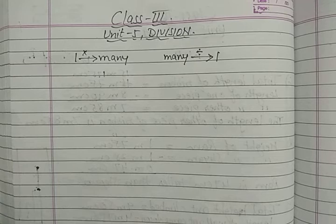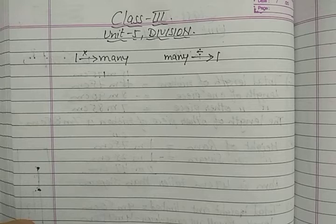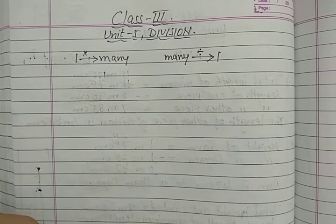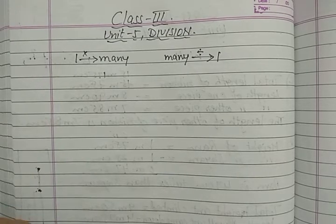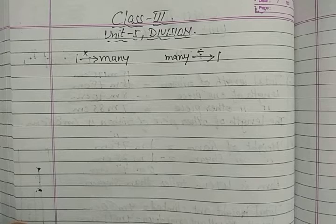Zyada cheezein hain aur aapko one ka nikalna hai — in that case you have to divide. And the other situation is when something is given and you have to equally distribute it — equally distribute karna hai — then in that case also you have to divide.